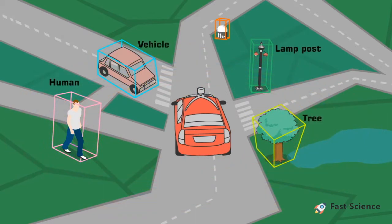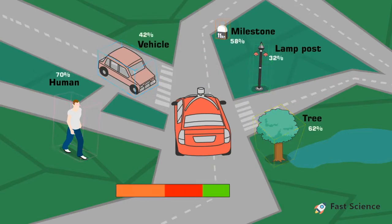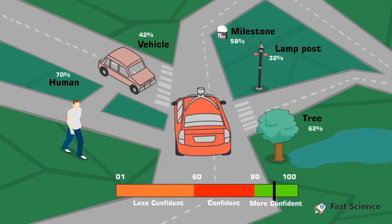But these predictions may not be 100% accurate, so each prediction has a certain confidence score. If the confidence score is above the confidence threshold, the prediction is assumed to be true.